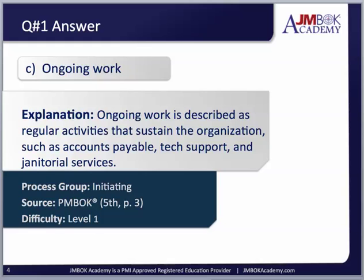Ongoing work is stuff we do all the time — we answer email, fix things that break in the office, send out the maintenance team, handle customer support — whatever is done day to day. It's not project-oriented. This comes from the initiating process group, the PMBOK 5th edition, page 3. Difficulty level 1, but it's important because many exam questions want you to understand the distinction between operational work and project work.